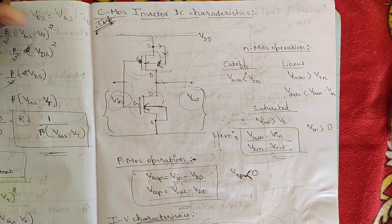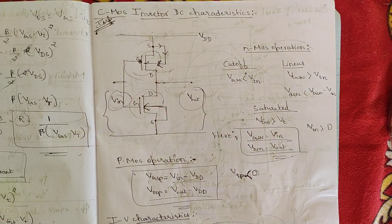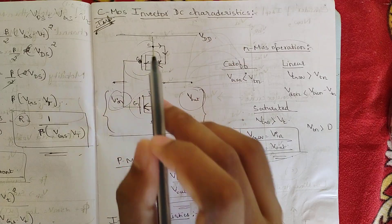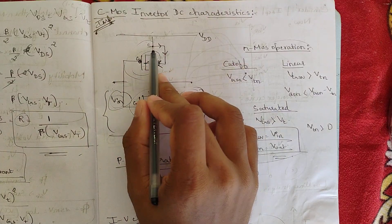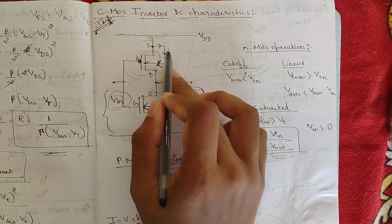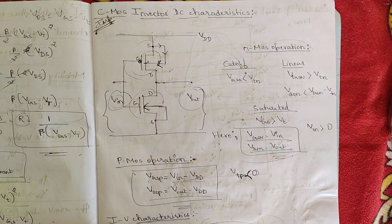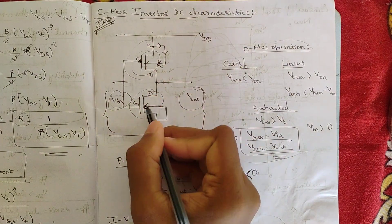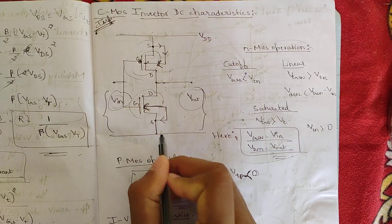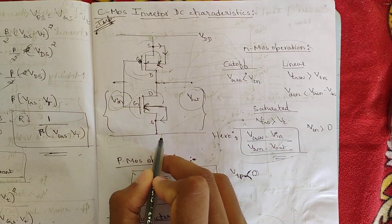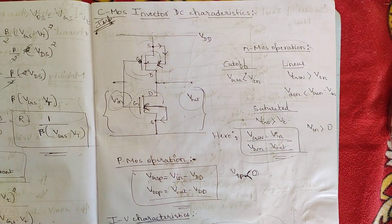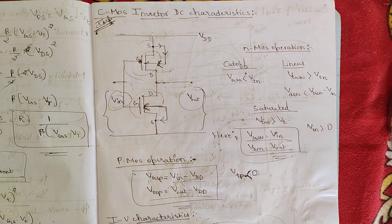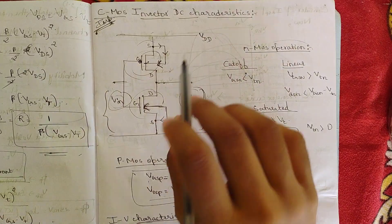As discussed in the previous video on body effect: for a PMOS transistor, the body terminal is connected to the source terminal, which is tied back to VDD to implement the logic high part. For an NMOS transistor, the body terminal is also connected to the source terminal, but this time it is tied to ground. That is why the NMOS and PMOS transistors are inverted relative to each other.